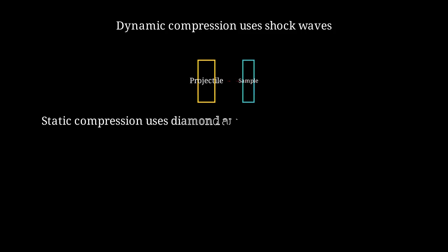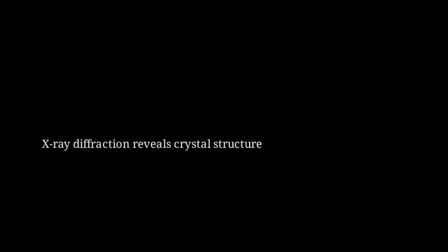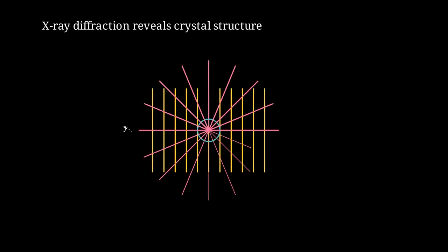Static compression uses diamond anvils, which slowly squeeze samples while maintaining pressure for longer periods. Scientists then use X-ray diffraction to reveal the atomic-scale crystal structure of the exotic ice phases. X-rays pass through the sample and diffract in patterns that reveal the arrangement of atoms, like a molecular fingerprint.